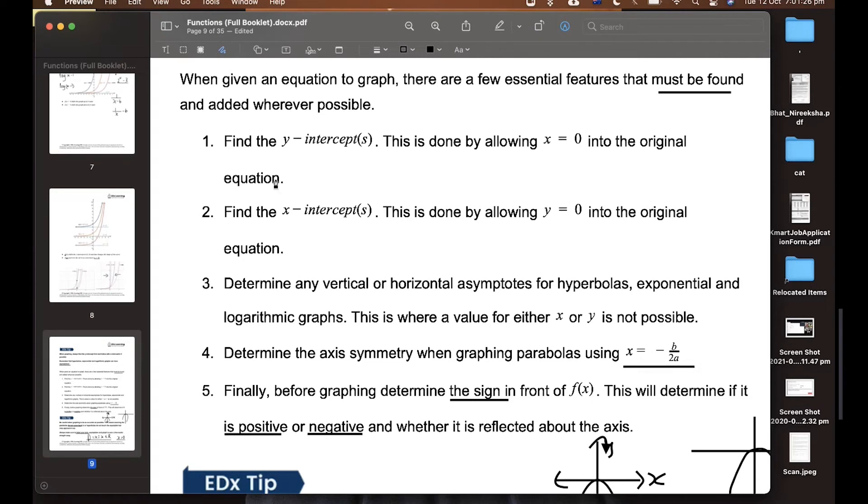First, you're going to find your y-intercepts, then your x-intercepts, then you're going to find out if there's any asymptotes depending on the graph. Then you're going to find your axis of symmetry when graphing parabolas.